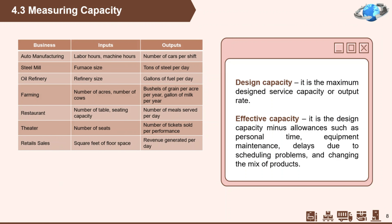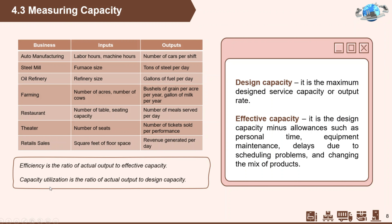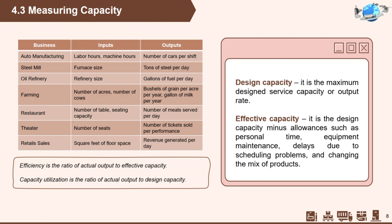The table here provides some examples of commonly used measures of capacity. These different measures of capacity are useful in defining two measures of system effectiveness: efficiency and utilization. We cannot rely on design capacity only or effective capacity only — these two should be used together to compute efficiency and utilization.